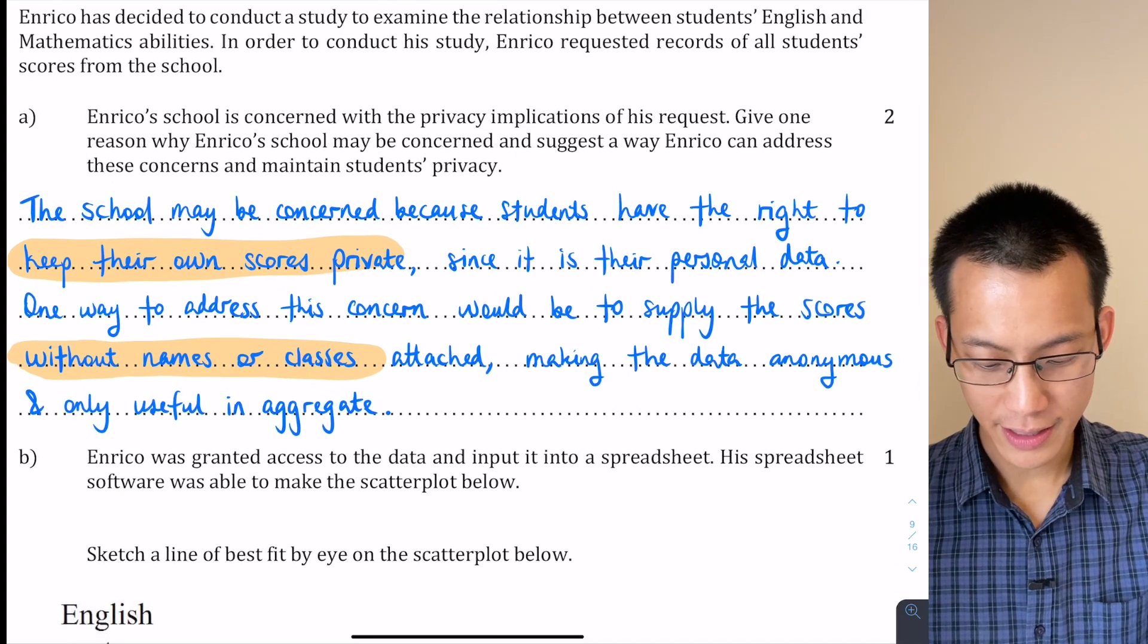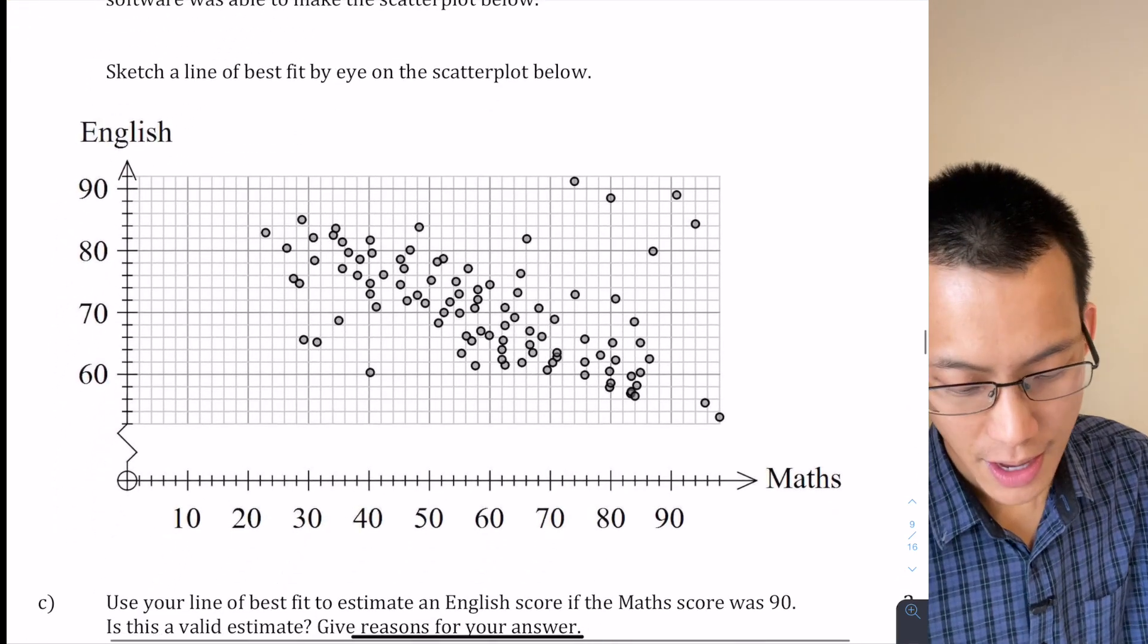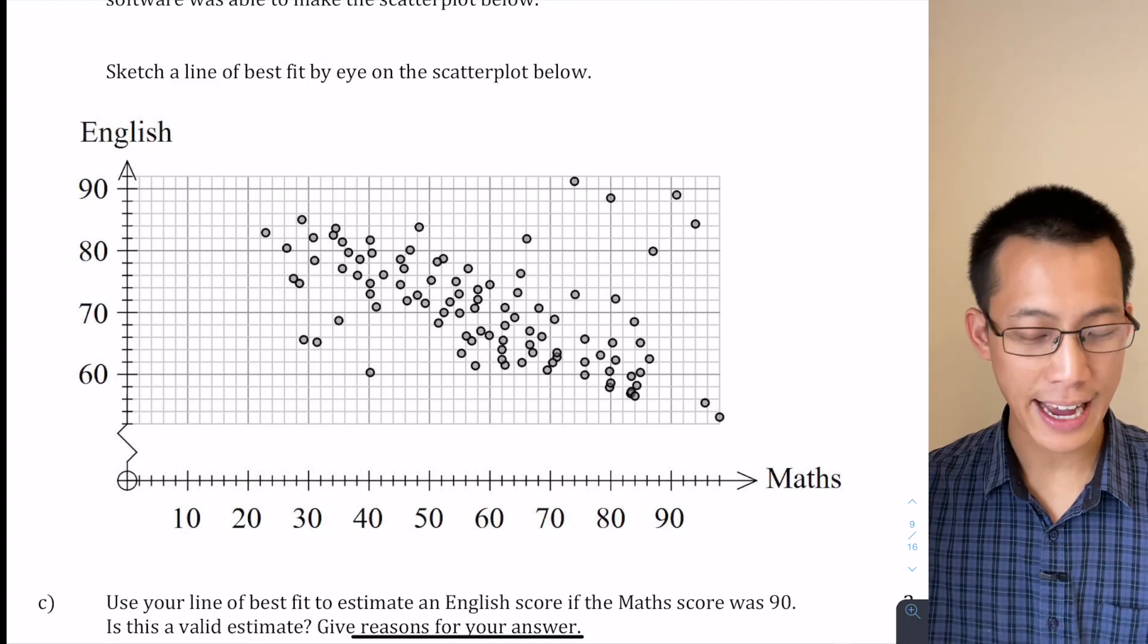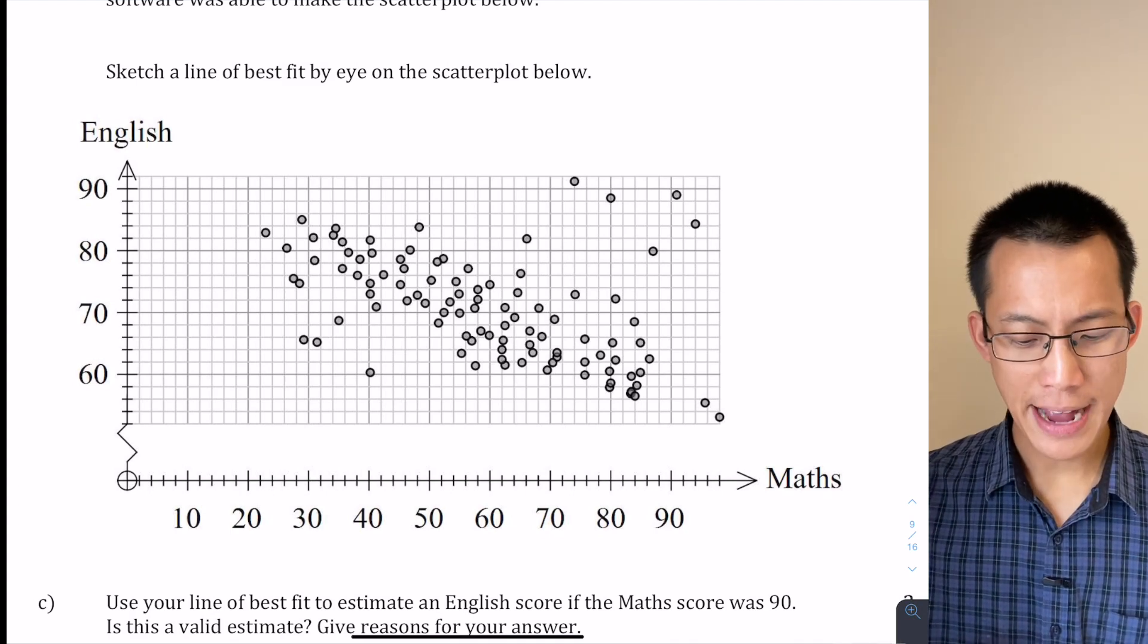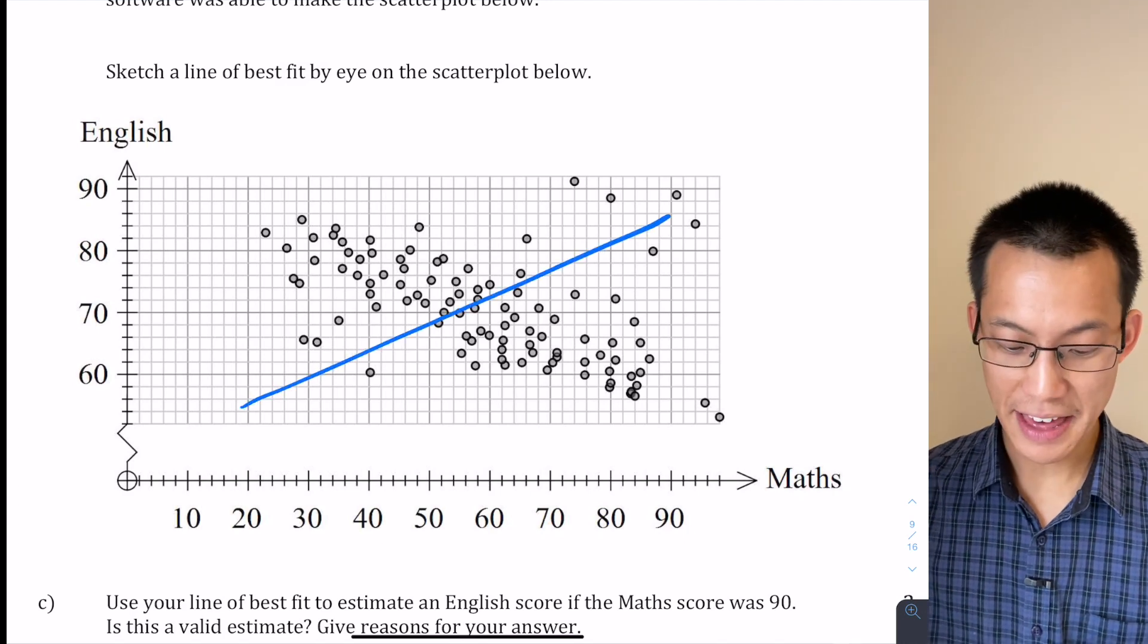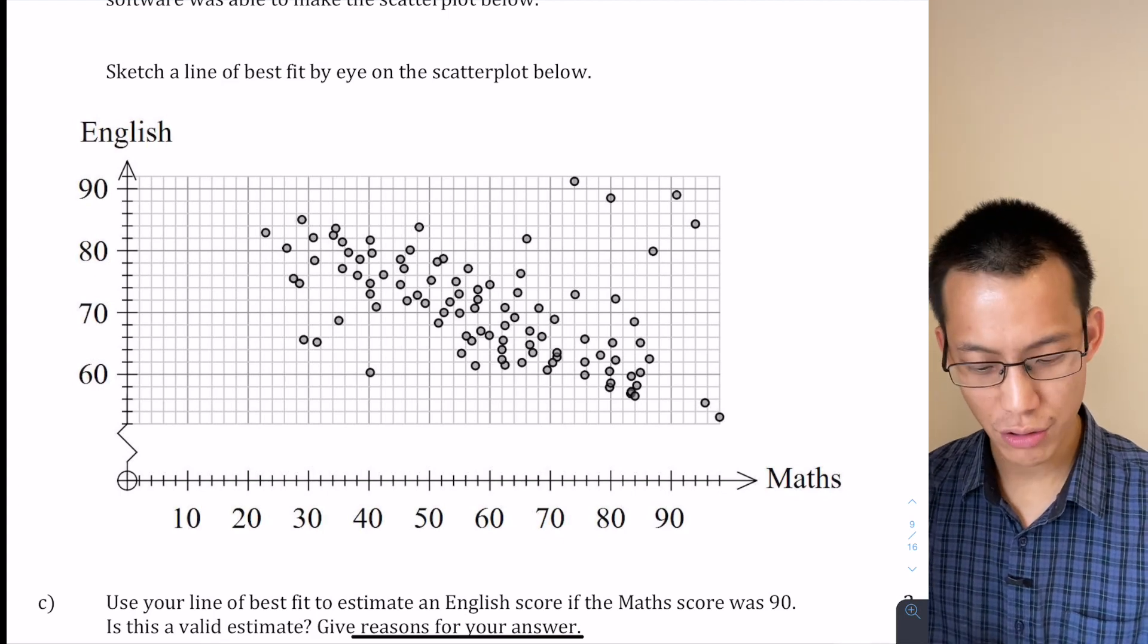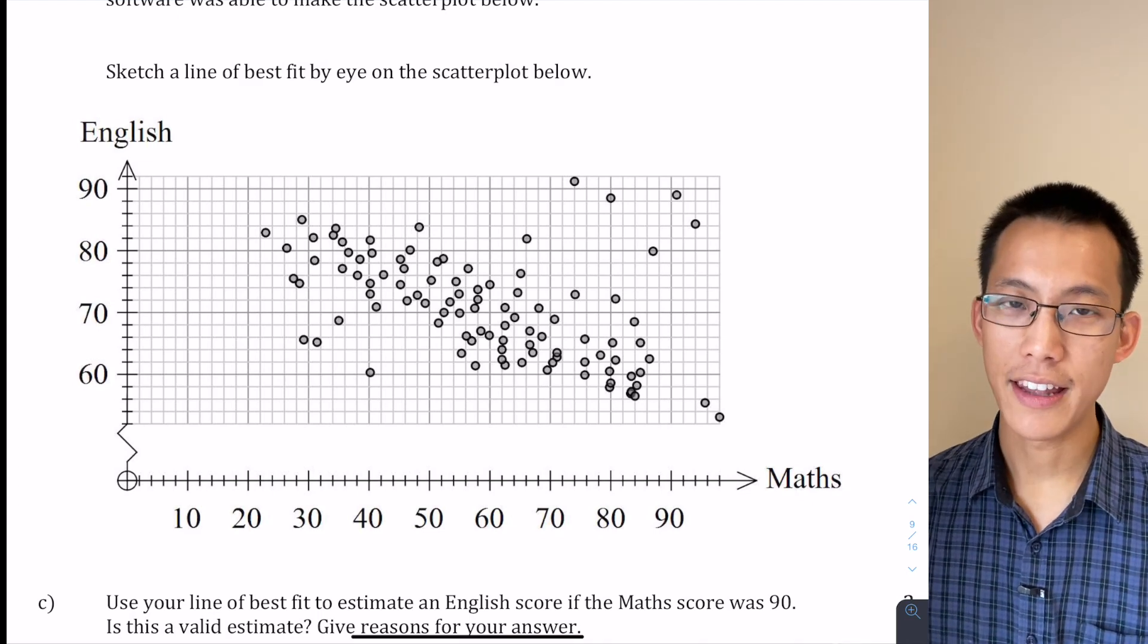Let's have a look at the next part. It says Enrico was granted access to the data and input it into a spreadsheet and this is the scatter plot that he created. Sketch a line of best fit by eye on the scatter plot below. So since we're doing this by eye, we know it's not going to be exactly accurate but we do want to make sure that the line of best fit that we draw matches the gradient of what you would expect the line of best fit to do. So if for example you draw a line that had a positive gradient that is clearly not fitting most of the data so that's a bit of a dud. And then secondly, notice that if we want to have a negative line of best fit here, we also want to make sure that roughly the same amount of data points are above the line of best fit and the same below.